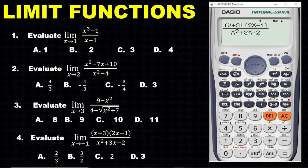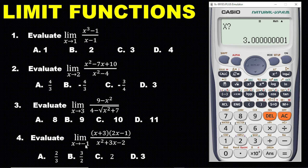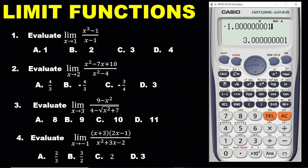Press CALC. The question says x is approaching negative one, so use a number close to negative one — for example, negative 1.0000001. Press the equal sign and we are getting 1.5. From the possible answers, 1.5 equals 3 over 2, which corresponds to option B.